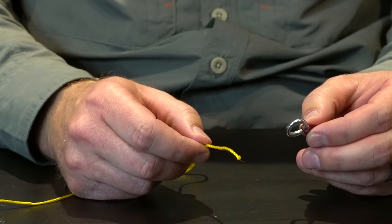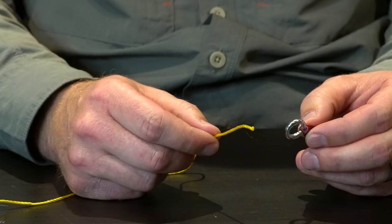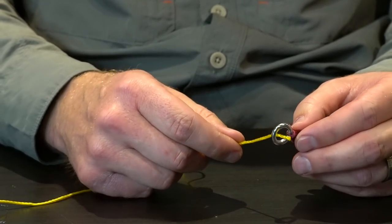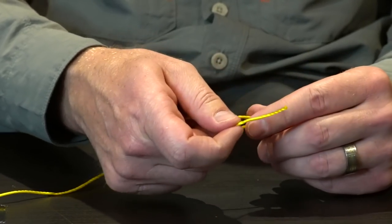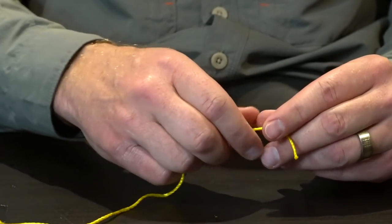I prefer the clinch rather than the improved clinch because the improved clinch has been proven to be less strong or less durable. It has less strength so you can eliminate one step by just doing a regular clinch knot.